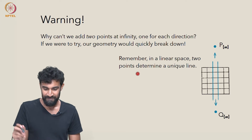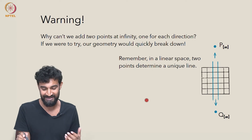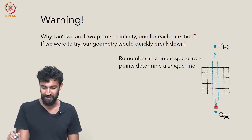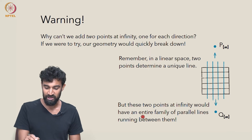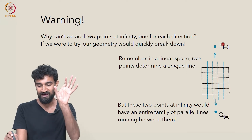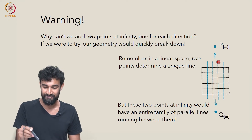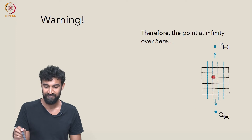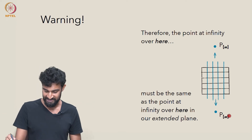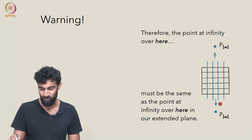If we were to try adding two separate points at infinity, it doesn't look too good. Remember, we're trying to build a linear space, and in a linear space two points determine a unique line. Well, how many lines are there between PM and QM? There would be an entire family of parallel lines running between them — all the lines in the vertical family would hit PM up there and QM down there. Rather than one unique line between them, there'd be infinitely many. Therefore, the point at infinity in that direction must be the same as the point at infinity in this direction. Whichever direction you go, you get to the same point at infinity PM.